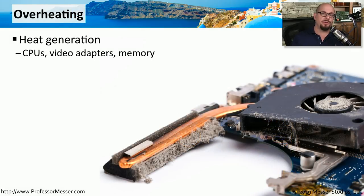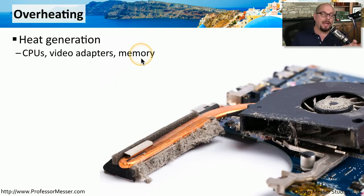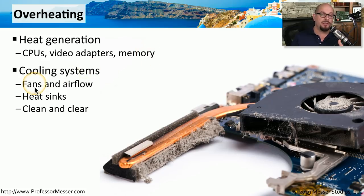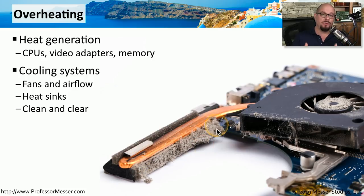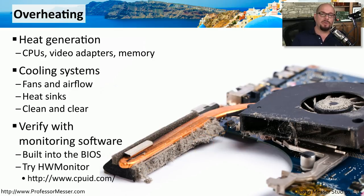If you don't have good airflow through your computer, then you'll find that the temperature rises very quickly. We have heat that's coming from your CPUs, from video adapters, from memory, and all of the other components that are inside of your computer. You want to check the cooling systems — make sure that your fans are working and that air is being pulled through the computer. Check your heat sinks and make sure that they are attached properly to the chips. And make sure that everything is clean and there's no dust that might be hindering the airflow through your computer. Most computers these days have sensors that will tell us what the temperature is inside of their computer and the temperature of individual components. You can often see these numbers in your BIOS, or you can try some third-party software.